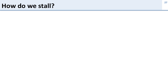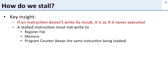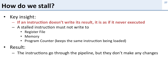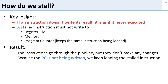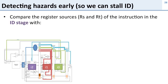We need to stall the pipeline to deal with these hazards — we need to wait until the data is available. The key insight is: if an instruction doesn't write its result, it's as if it never executed. So a stalled instruction needs to avoid writing to the register file, writing to memory, or updating the program counter. We need to turn off those writes. The instructions go through the pipeline but don't make any changes, and because the PC is not being updated, we keep loading the stalled instruction. We've converted the instruction to a bubble by disabling its writes.